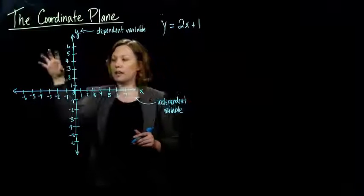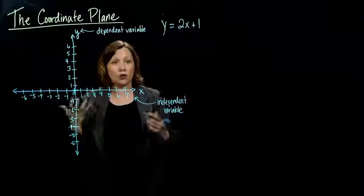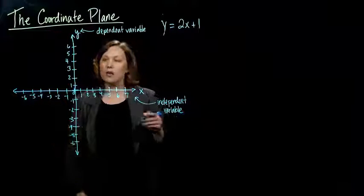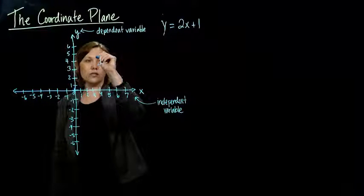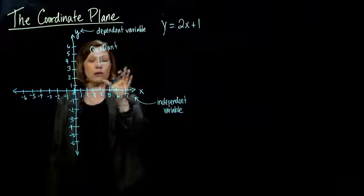So the coordinate plane, when we cross these two number lines, notice we make four sections. These four sections are called quadrants. Quad for four. So this guy is called quadrant one. And then it goes counterclockwise.